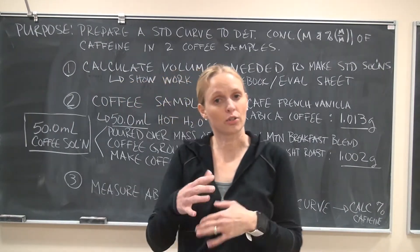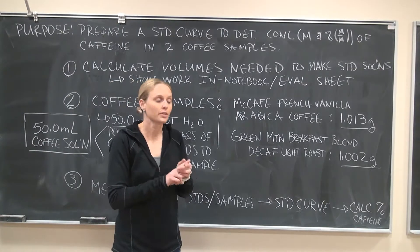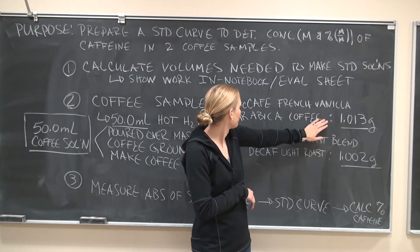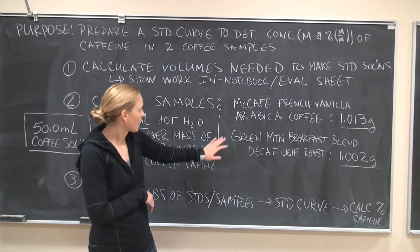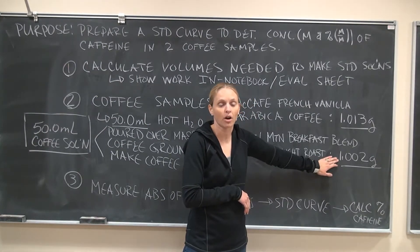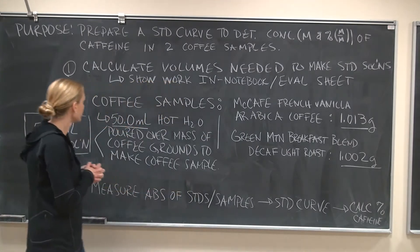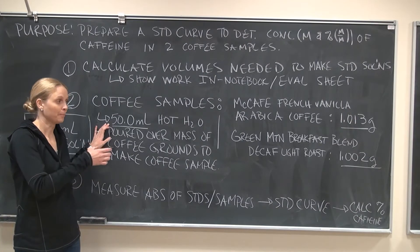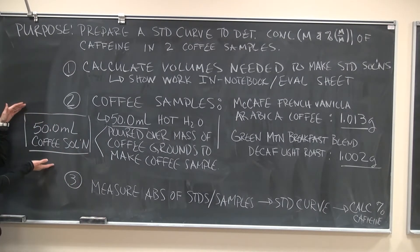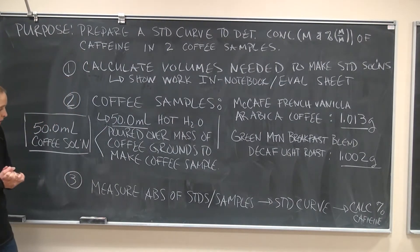The other important information you need is about the coffee samples. I took two different samples: one is a McCafe French Vanilla Arabica coffee — I measured out 1.013 grams — and the other is Green Mountain Breakfast Blend, a decaf light roast, and I weighed out 1.002 grams. I then placed each in filter paper and poured 50 milliliters of hot water over each to make the coffee sample, giving a final volume of 50 milliliters of coffee solution.